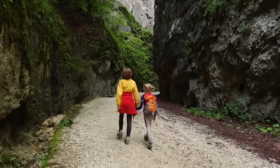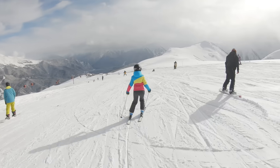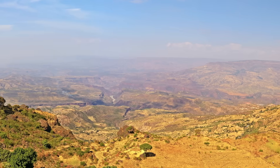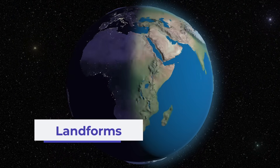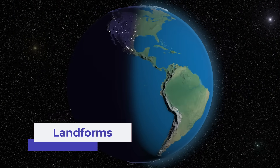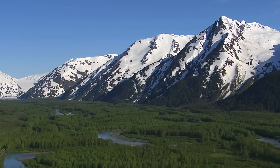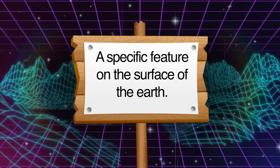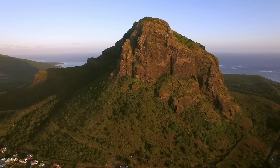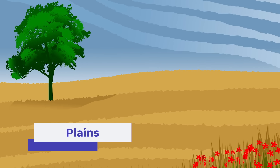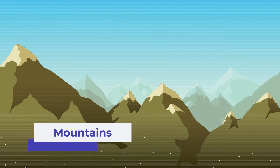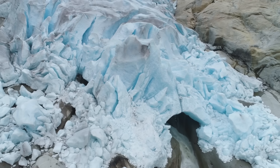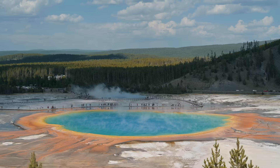Have you ever gone hiking in a canyon? Or maybe you've skied down a snowy mountain? You may live in a valley without a hill for miles. Earth has all kinds of features like these called landforms. A landform is a specific feature on the surface of the Earth, ranging from huge things like plains, plateaus, and mountains, to smaller stuff like hills and valleys. There may be other types of landforms that you've never seen.